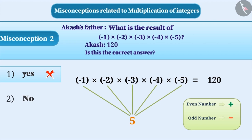Here, the number of negative integers are 5, which is an odd number. Therefore, a minus sign has to be included in the result. Thus, the correct answer to the question is minus 120.